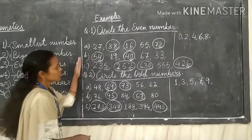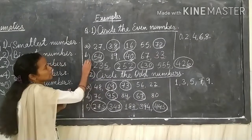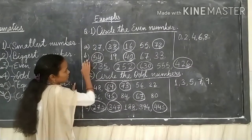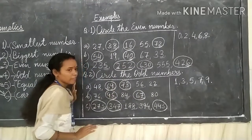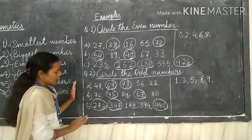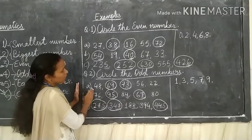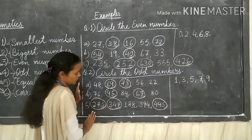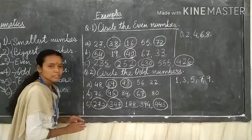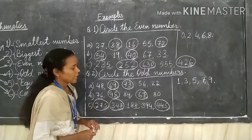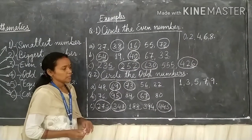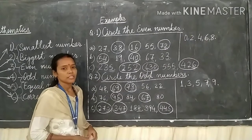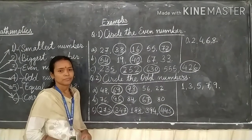Now you just check all the answers. In question number 1 ABC I have circled only even numbers, and in question number 2 I have circled only odd numbers. So you have to follow this method and do your homework. See you in the next video children. Thank you.